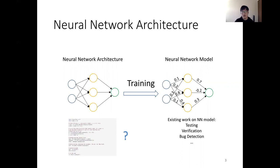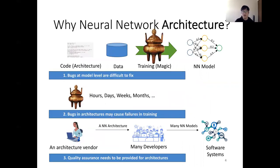The question arises: why neural network architecture? First, bugs at the model level are difficult to fix because neural network models are trained like magic, so fixes on the parameters are unexplainable to developers. However, fixes on the code are more familiar to developers. Second, bugs in architectures may cause failures in training. Once a failure occurs, it will invalidate the training model, so days, weeks, or months of training will be wasted. Detecting numerical bugs at the architecture level can avoid this kind of time and resource waste.